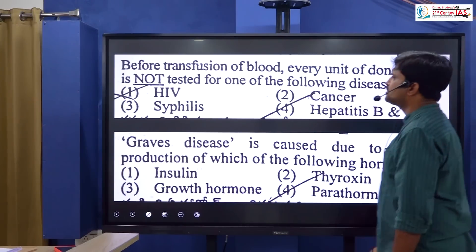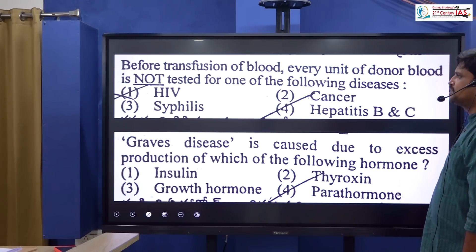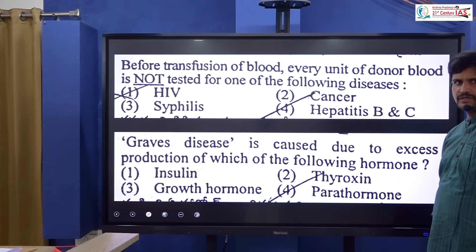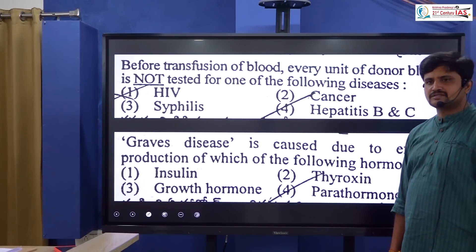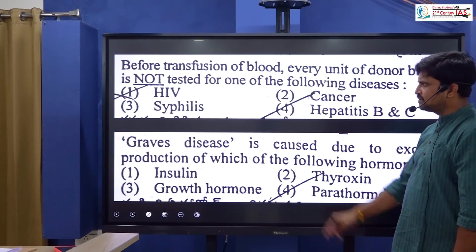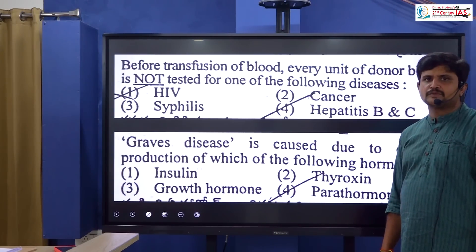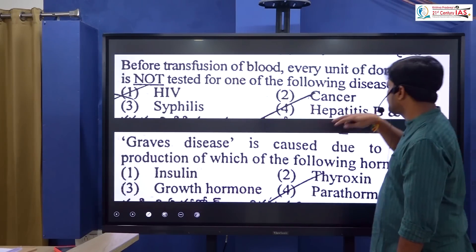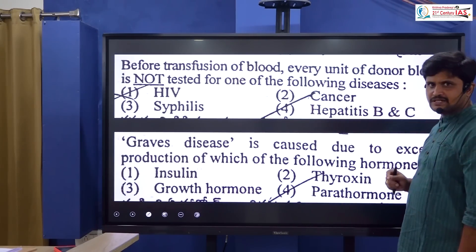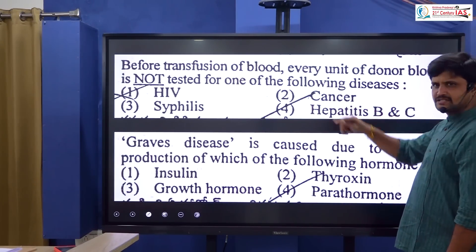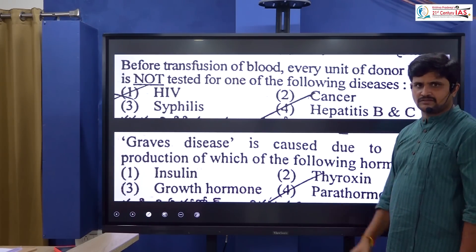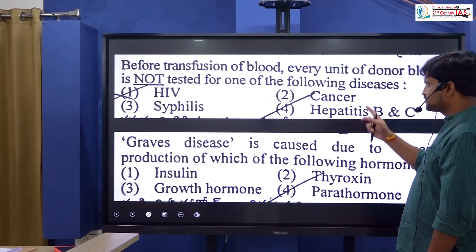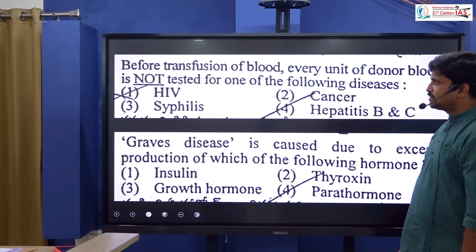Before transmission of blood, every unit of donor blood is tested for HIV, syphilis, hepatitis B and C. Cancer is not tested for in blood banks because it is not a transmissible blood-borne disease — it involves uncontrolled growth of cells. Therefore, answer option 2 is correct.